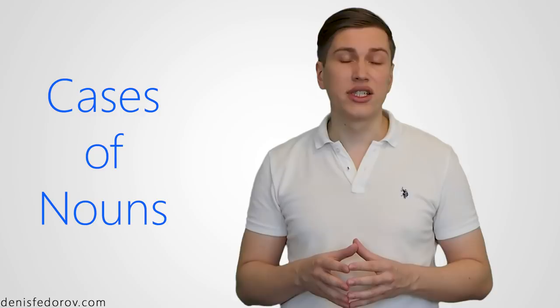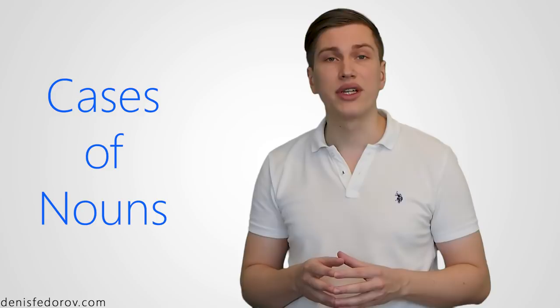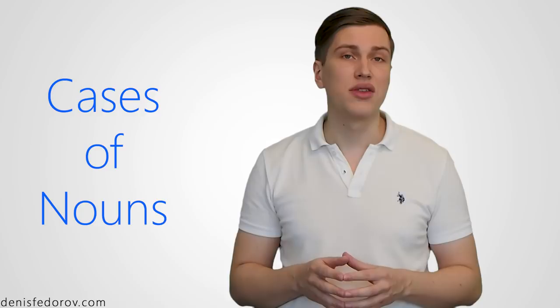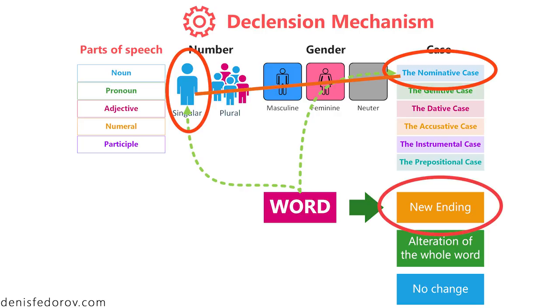From now on, in the further videos devoted to cases, we will speak only about cases of nouns. When you grasp the concept of cases for nouns, cases of other parts of speech won't seem that difficult. To decline a word into a different case, we usually simply change the ending from the nominative case singular — the default dictionary form — and add the ending that belongs to the case of our choice.